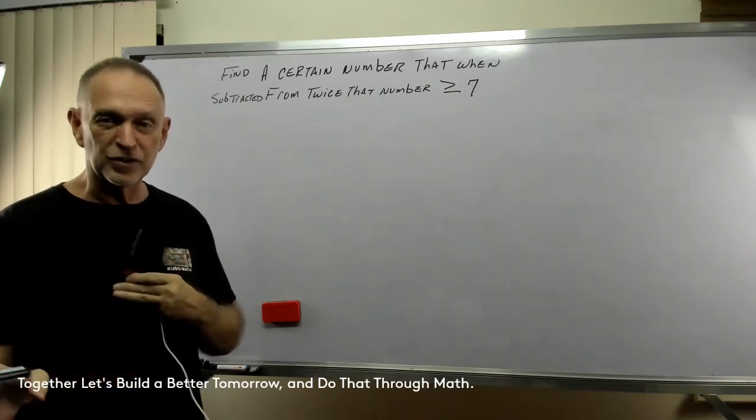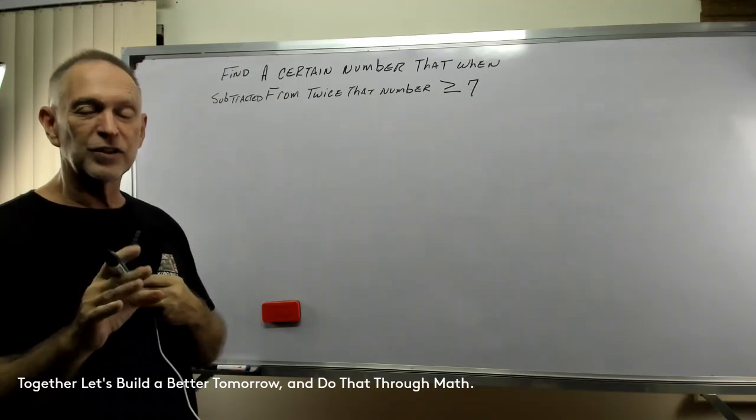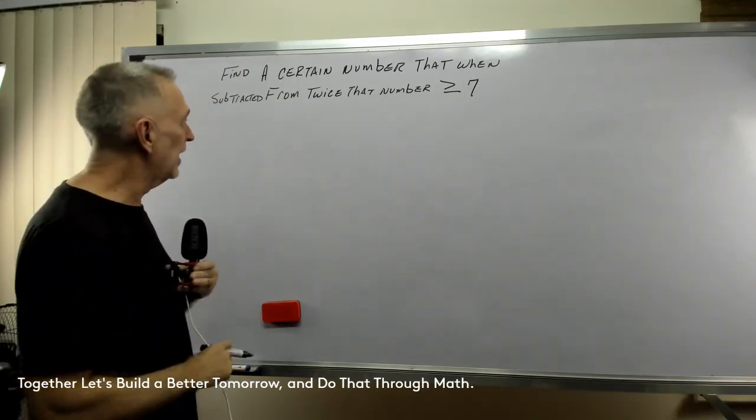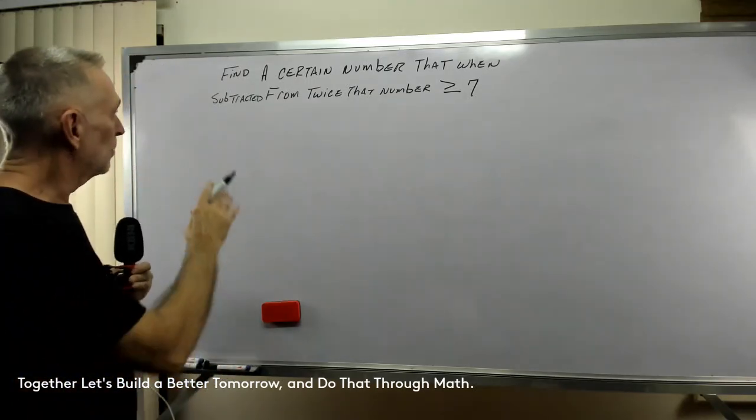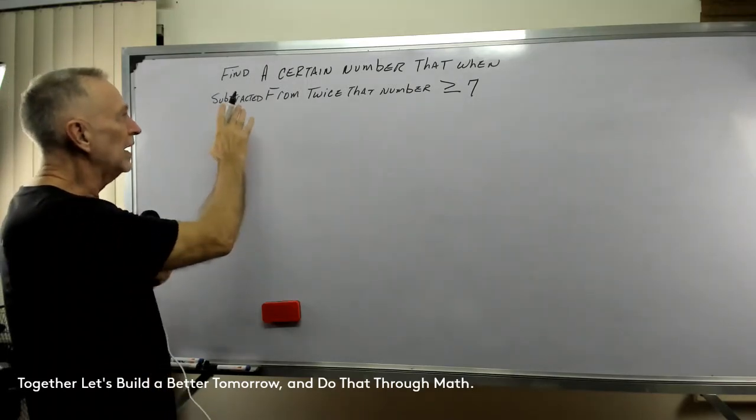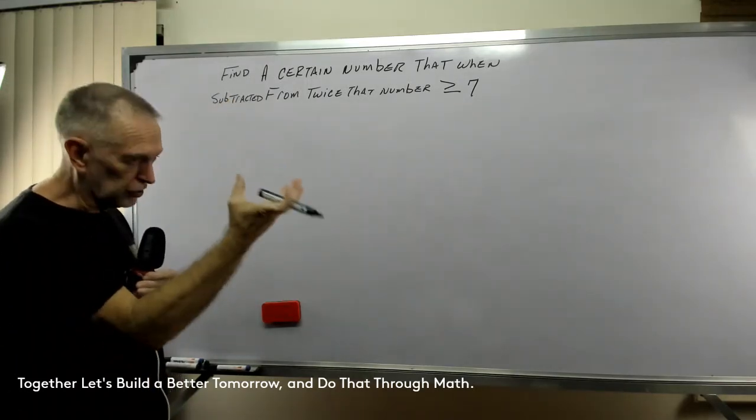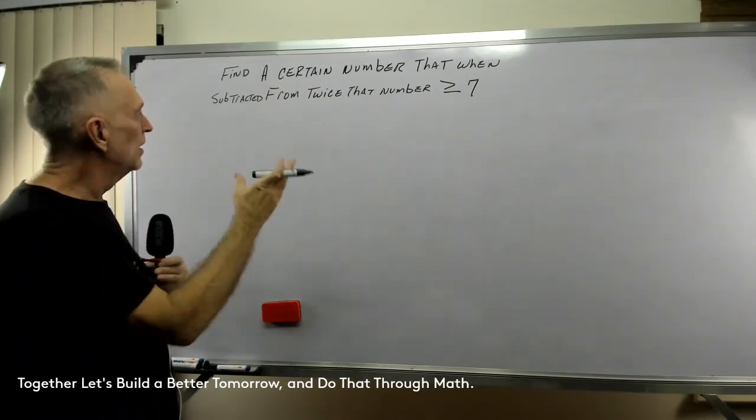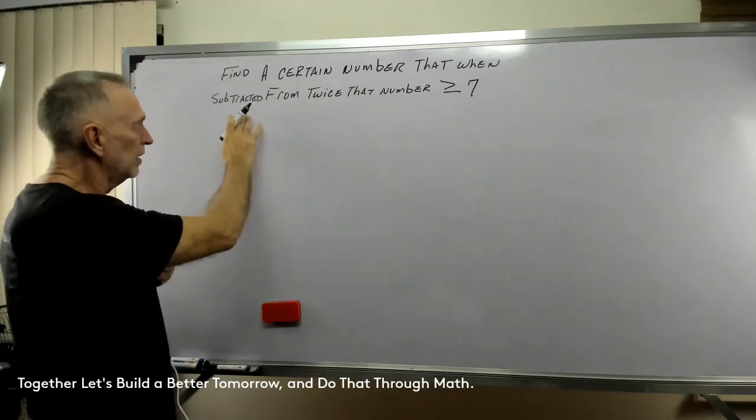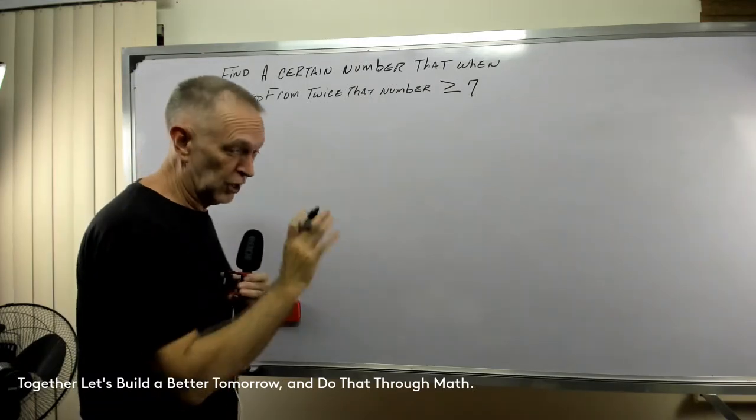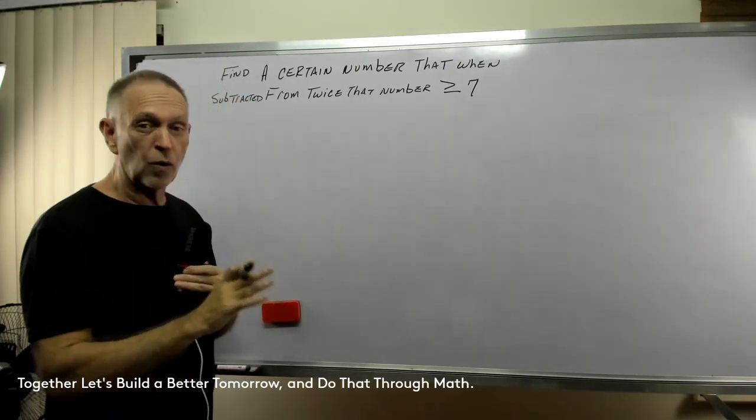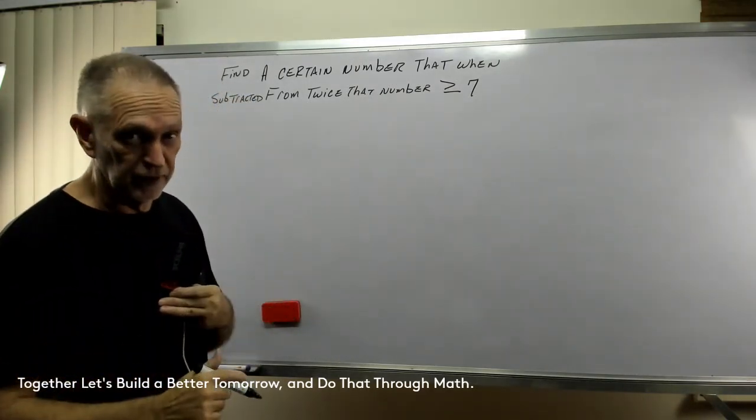And all you other seven-year-old guys, girls out there, let's take a look at it. Okay, the problem is, find a certain number, so there's some number out there, that when subtracted from twice that number, it's greater or equal to seven.